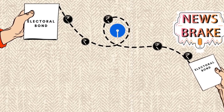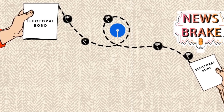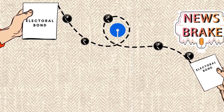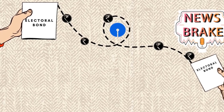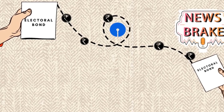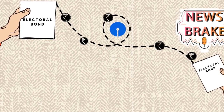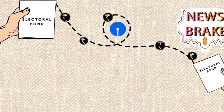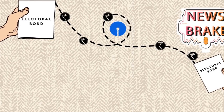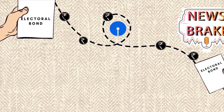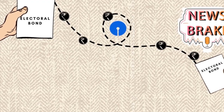The distinguishing feature of these bonds lies in their anonymity. The identity of the donor remains undisclosed, even to the Election Commission of India (ECI).